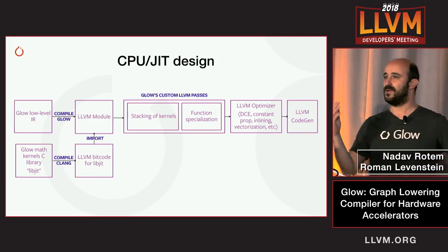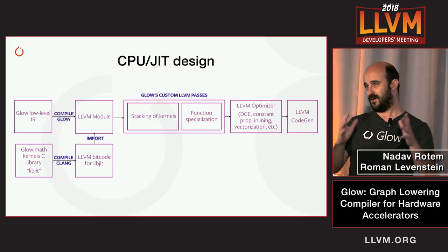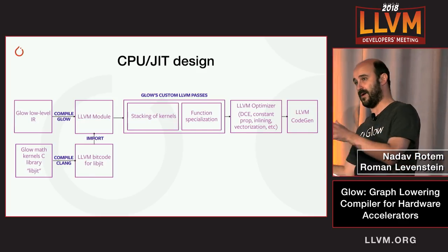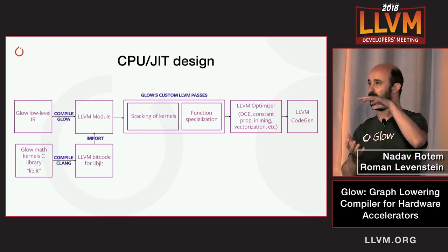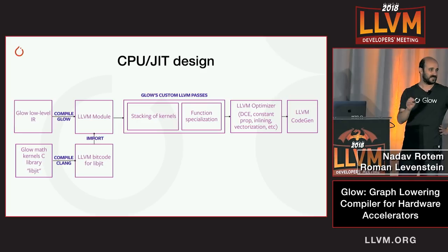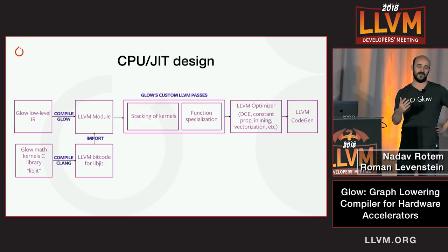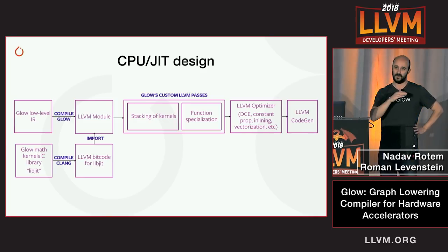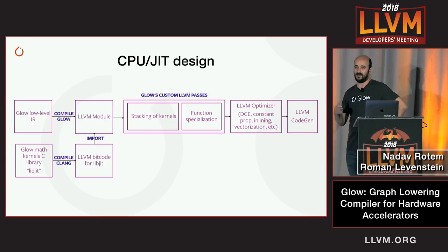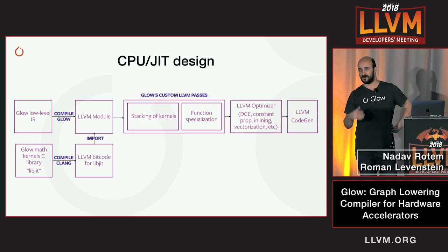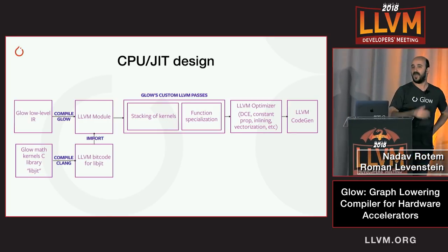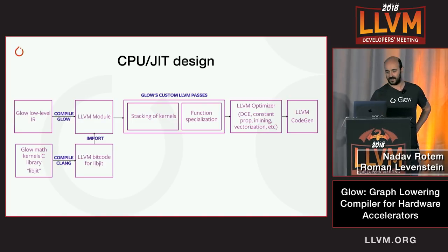Once we have emitted the LLVM IR for the neural network model, we add all the pre-compiled mathematical kernels into the same LLVM module. It's still not efficient at this point, so we run a couple of Glow-specific LLVM passes over this code. Then we let the rest of the standard LLVM pipeline handle the rest: the optimizer does dead code elimination, inlining, constant propagation, and so on, and then the code gen generates code for the target architecture.